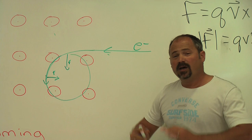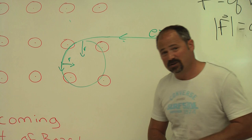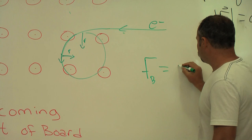That is by definition a centripetal force, so we can say that this force of magnetism is equal to mass times the centripetal acceleration, which is v squared over r.